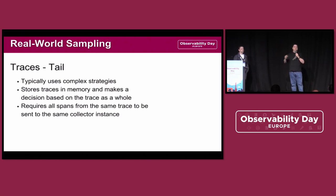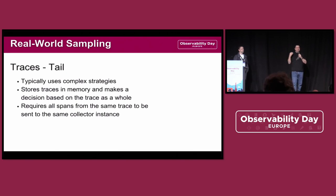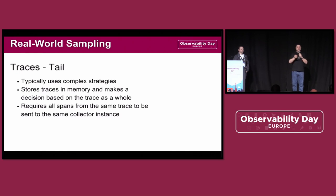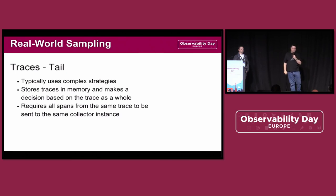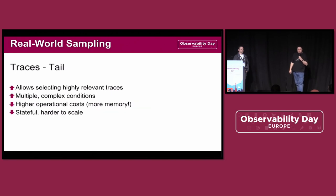It requires all spans to be sent to the same collector. If we have 10 collectors and do round-robin load balancing, parts of our traces go to one collector and parts to another, and when we run the decision we're only making it based on partial traces, which might be wrong. So tail sampling requires all spans from the same trace to go to the same collector.